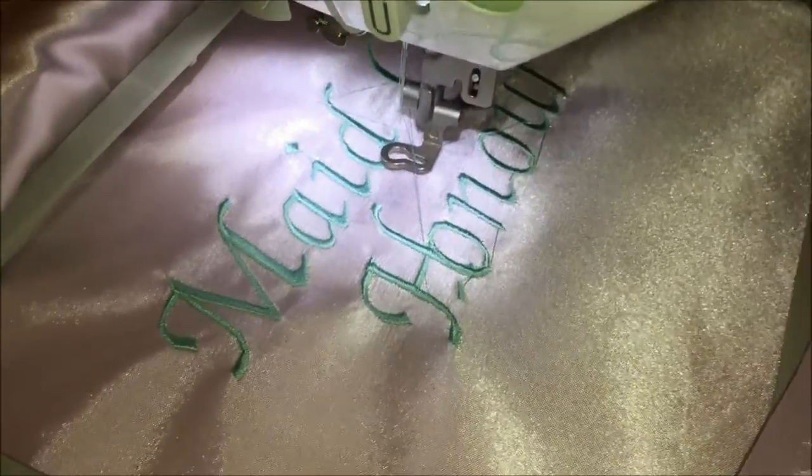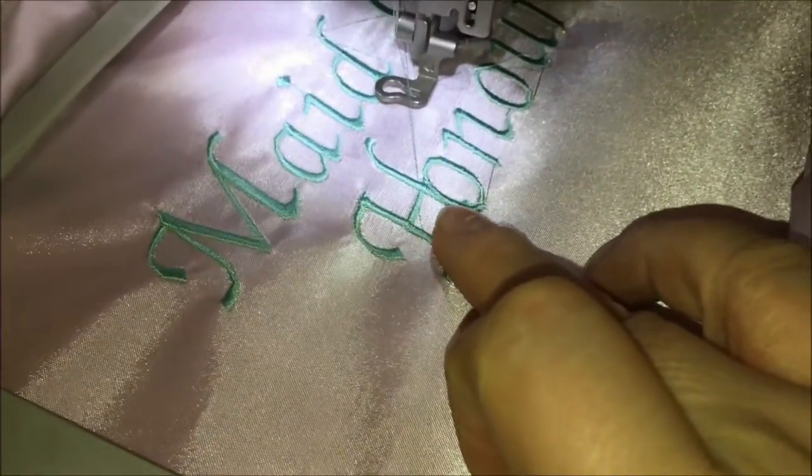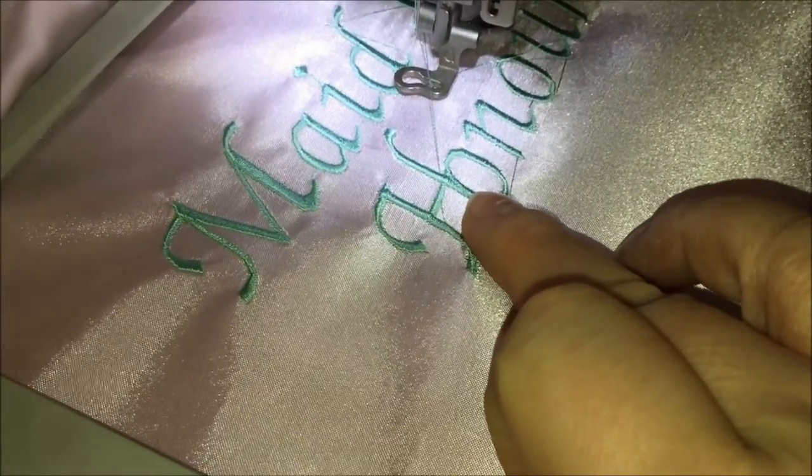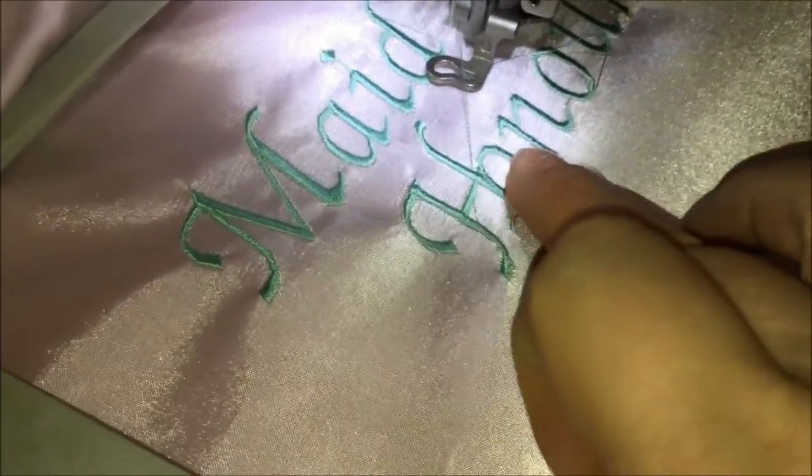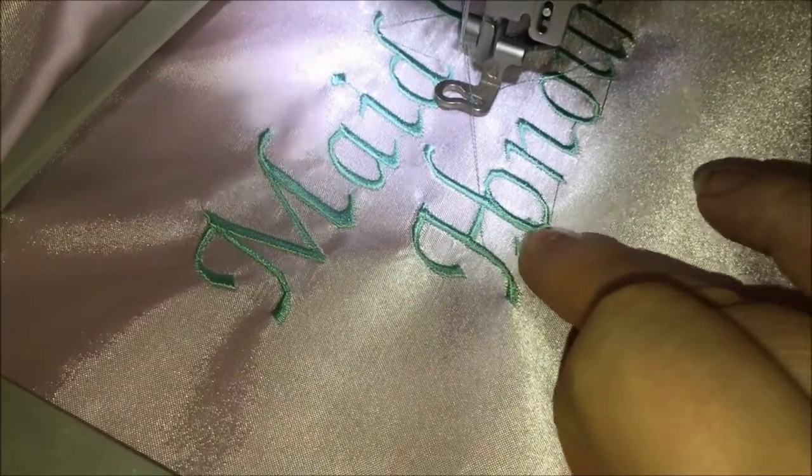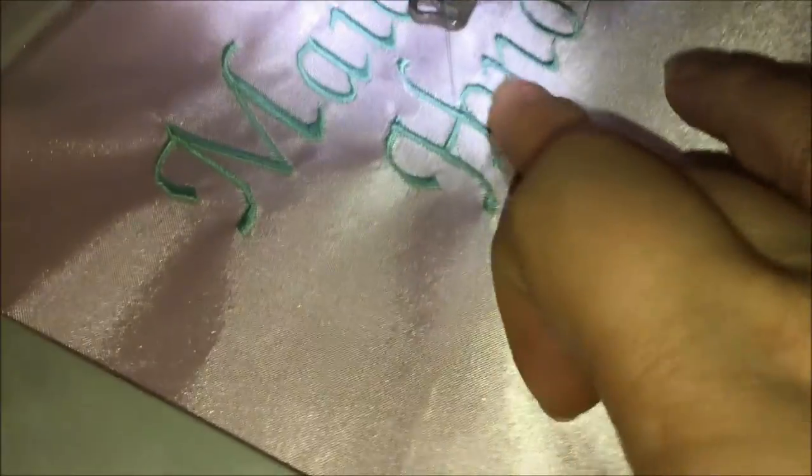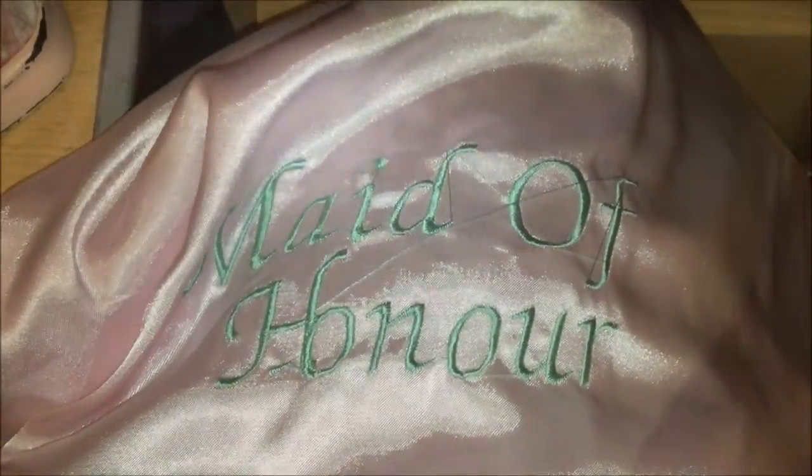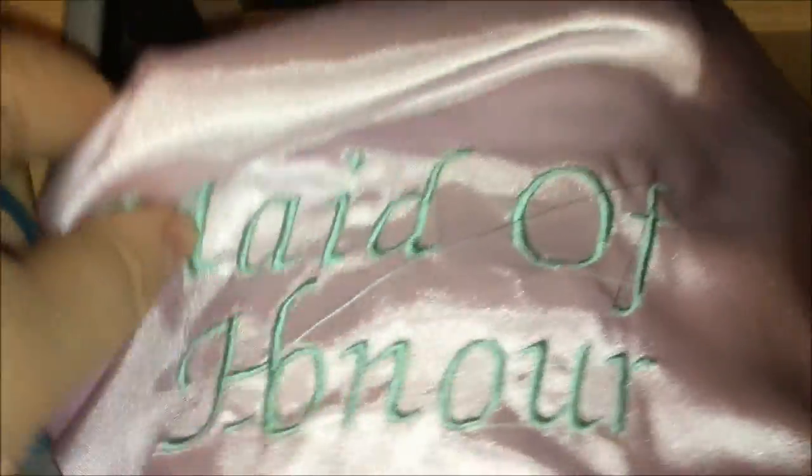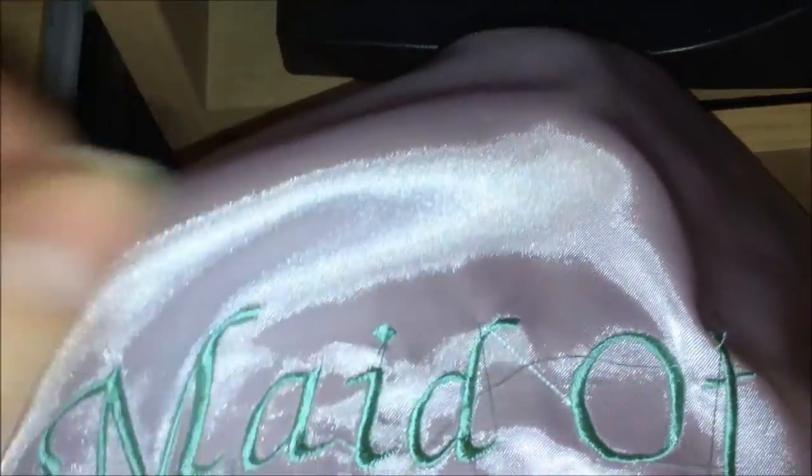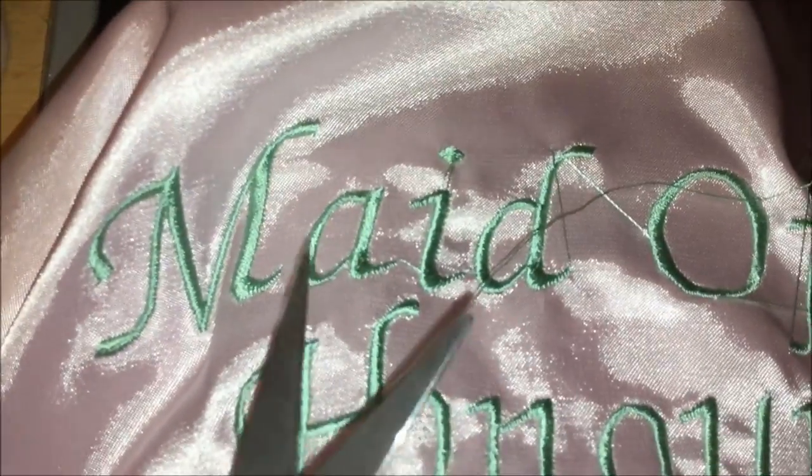And that's the finished product. Unfortunately, the hoop got knocked off, so this bit ended up being a bit further over than it should have been, but it's not that noticeable. Okay, so when it comes off the embroidery machine, we'll have all the extra threads like this one. So what you need to do is just chop them off with some embroidery scissors.